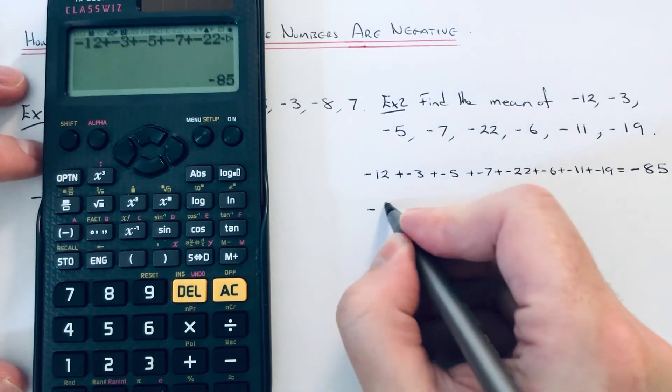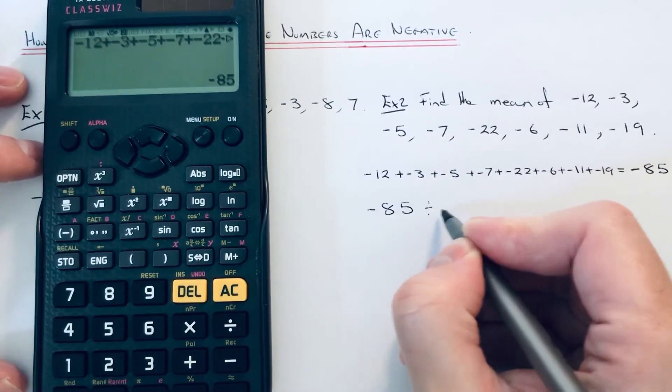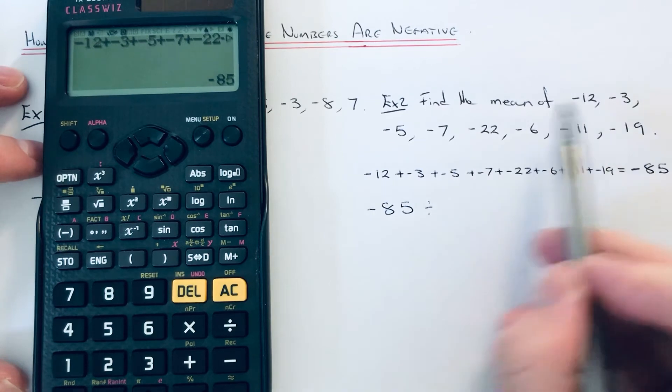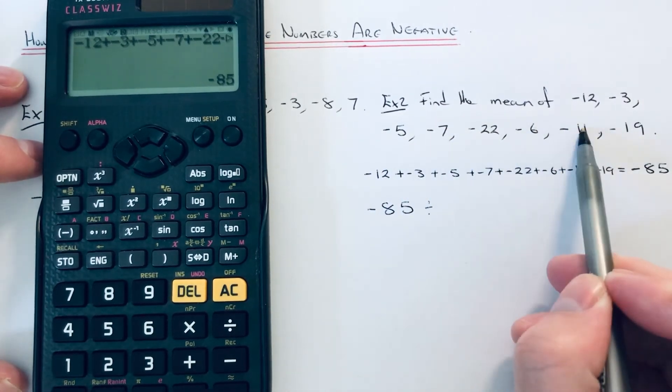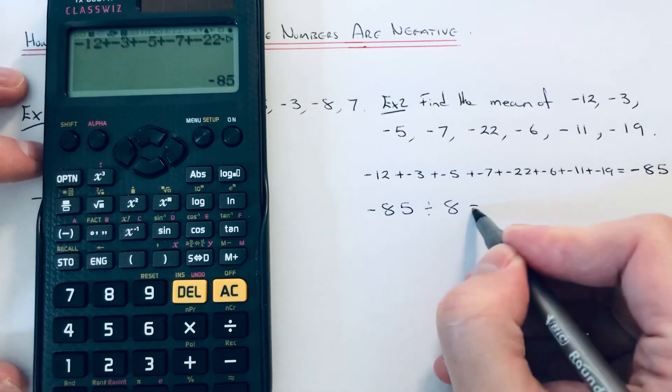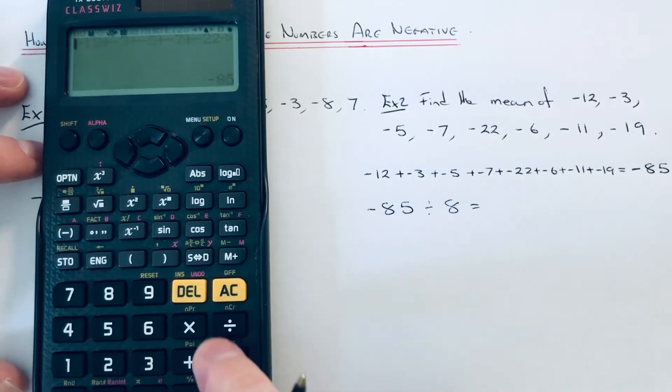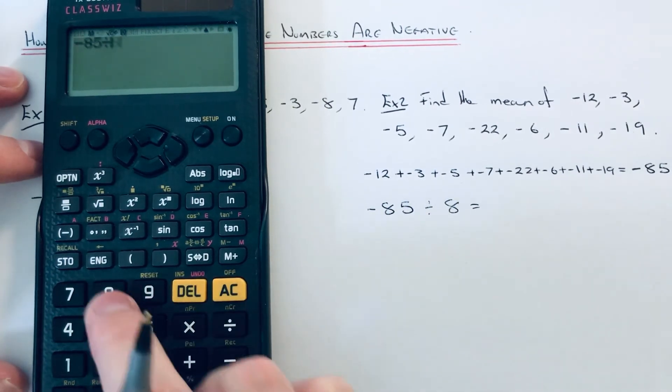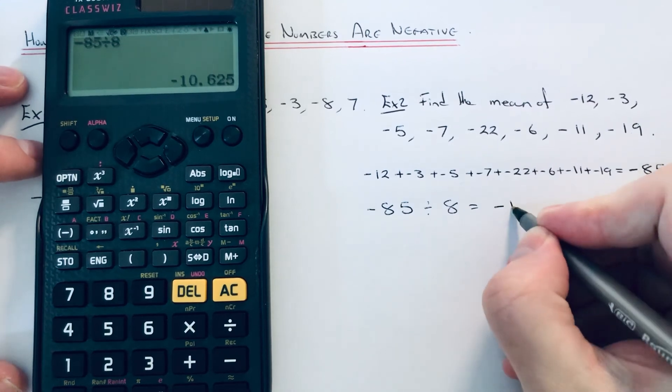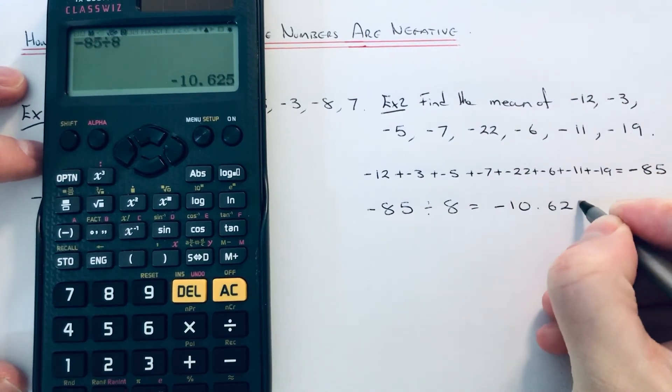We just need to now divide that by how many numbers we've got. So we've got 1, 2, 3, 4, 5, 6, 7, 8. And we get an answer of minus 10.625.